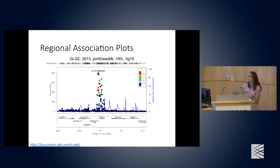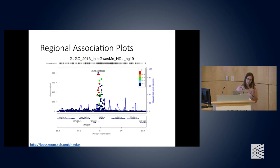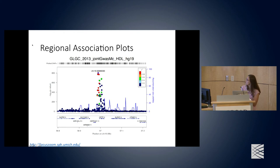You can zoom into particular regions through regional association plots. Here is the CETP locus from the HDL GWAS. The top variant is usually the reported variant in the paper, but there are many other significant associations within the locus.